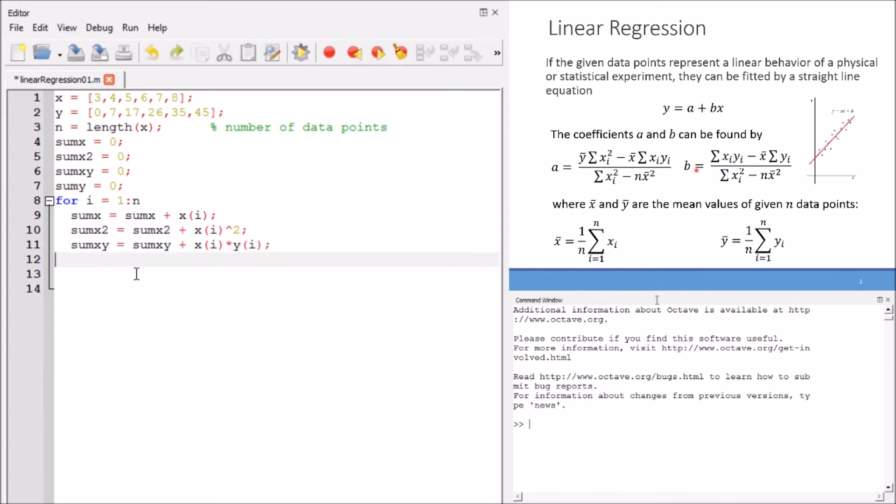Then, we also compute the sum of multiplied x and y values, every xi and yi values. Also, the sum y, the summation of y component, every yi. This is needed in the notation of the b coefficient.